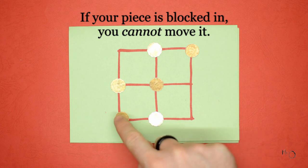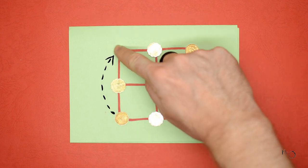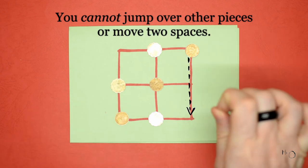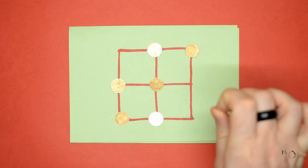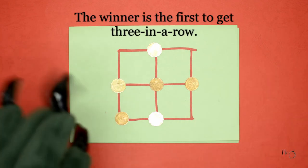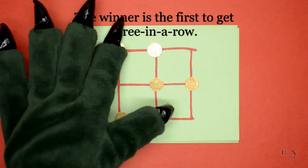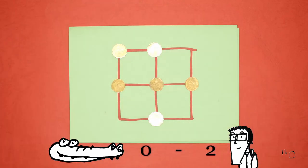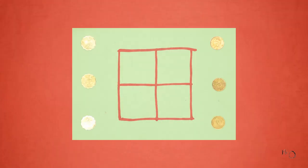And you cannot jump over other pieces or move two spaces. The winner is the first to get three in a row, like this. Yay! Now I know what you're thinking: this is like tic-tac-toe, right?